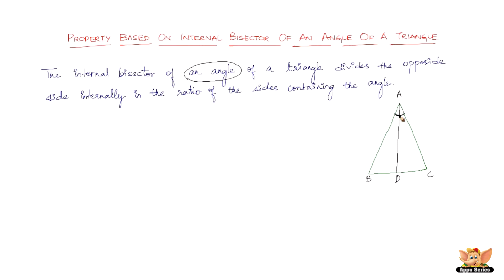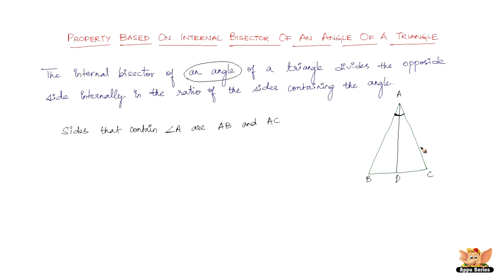What this bisector does is it divides the opposite side. The opposite side is BC. The line AD bisects angle A, so naturally the opposite side is going to be BC. Now it divides side BC internally in the ratio of the sides containing the angle. The sides that contain angle A are AB and AC.